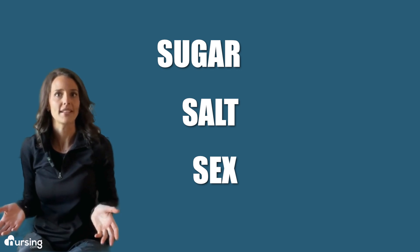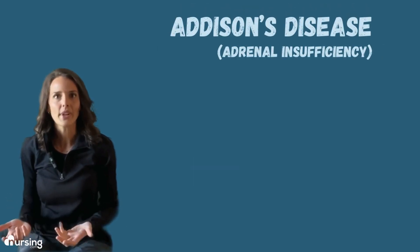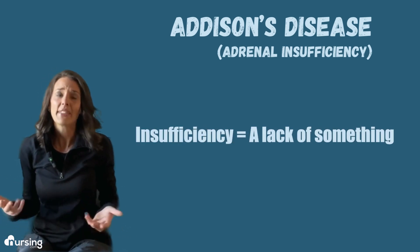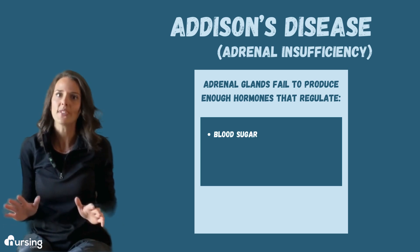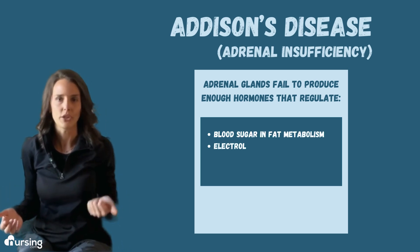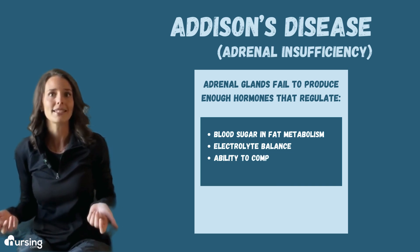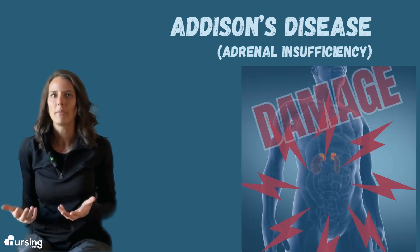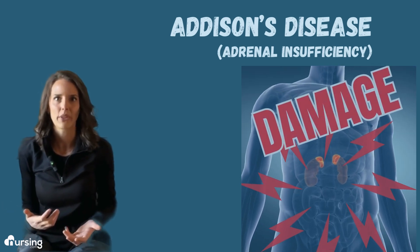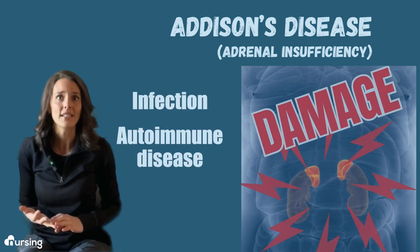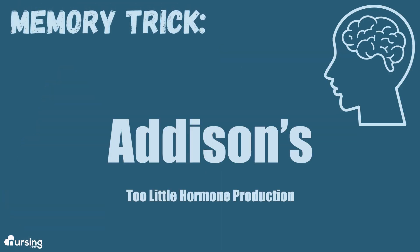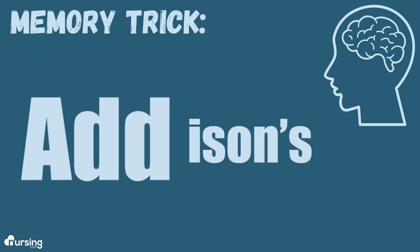Let's go over each disease process, starting with Addison's. It's also known as adrenal insufficiency, and insufficiency means a lack of something. With Addison's, the adrenal glands don't produce enough of the hormones that regulate blood sugar and fat metabolism, electrolyte balance, and the ability to compensate in fight or flight. It's usually caused by damage to the adrenal glands, whether from infection, autoimmune disease, or tumor growth. You can remember that it's Addison's that involves too little hormone production because the treatment for Addison's is to add or replace those hormones.